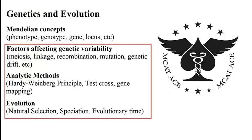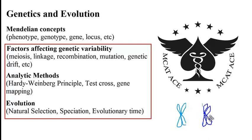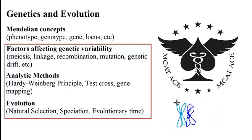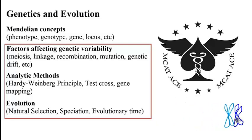If you recall, during prophase we have homologous chromosomes being lined up. Then during meiosis one, these homologous chromosomes will separate from each other. During meiosis two, the sister chromatids will separate from each other. Now if there is an error — for instance, in meiosis one, instead of separating the two homologous chromosomes, they both go to one side — that would be an example of non-disjunction.